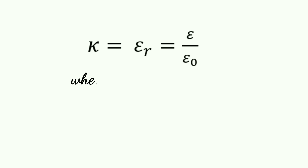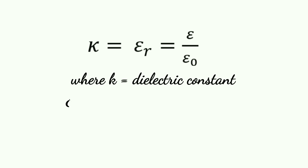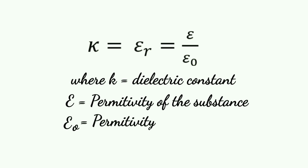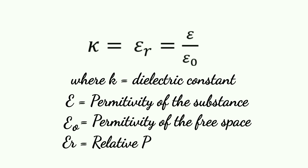So K equals ER, which equals E upon E-naught. This is the formula of dielectric constant. K is the dielectric constant, E is the permittivity of the substance, and E-naught is the permittivity of free space.